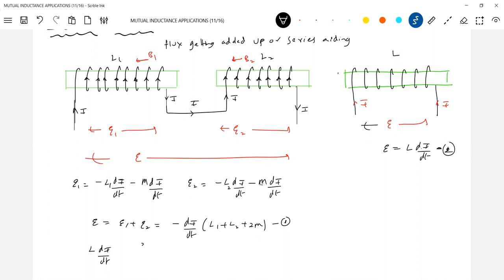Substituting 2 in 1. L di by dt, negative sign, di by dt, L1 plus L2 plus 2M. So comparing these two, so what is L equal to? L1 plus L2 plus 2M. What is M? Mutual inductance between the coils.